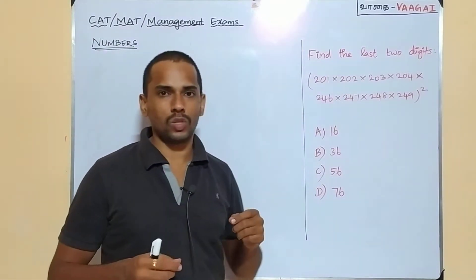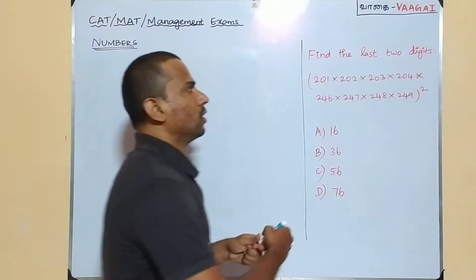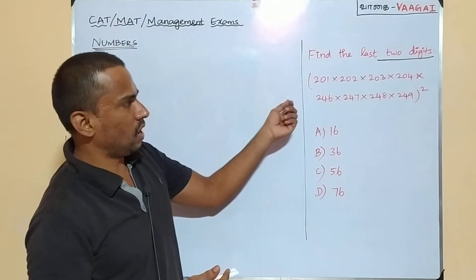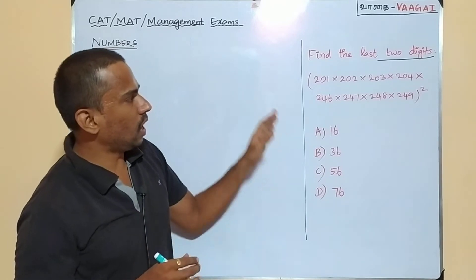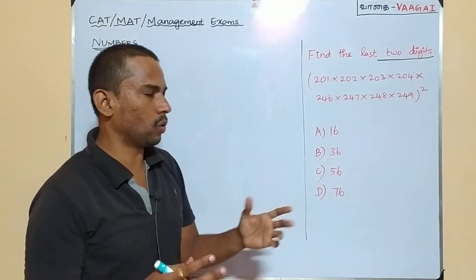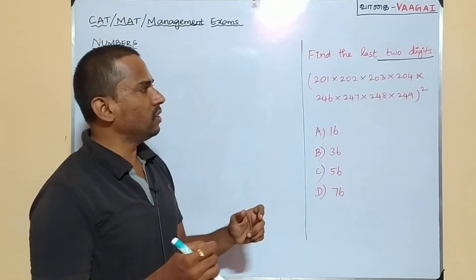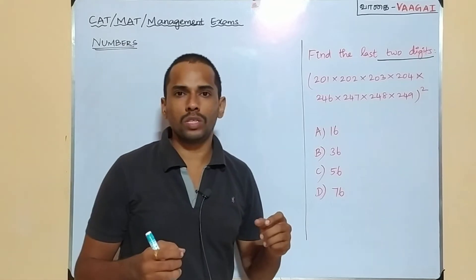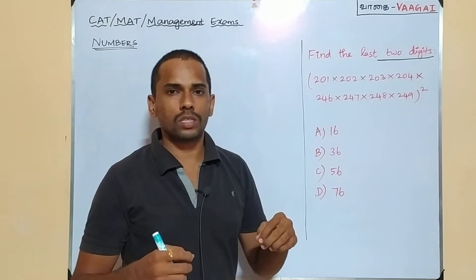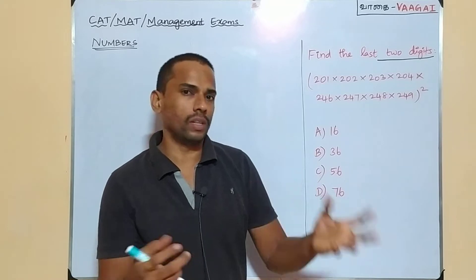Find the last two digits of the given expression. We have a very lengthy expression — a product raised to the whole square, raised to the power 2. The question appears to be too easy but it involves some good approach and also some lengthy workout to get the answer.